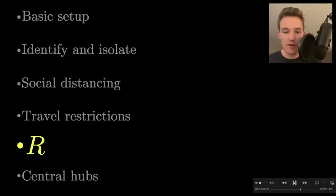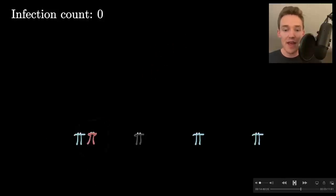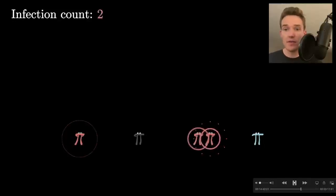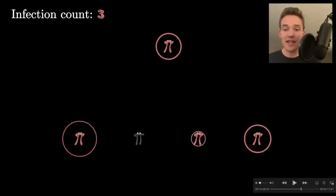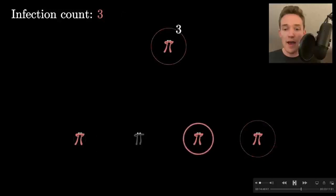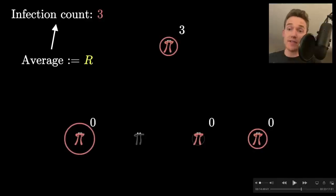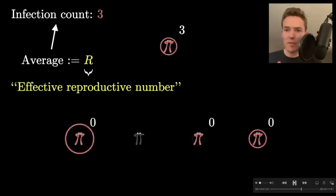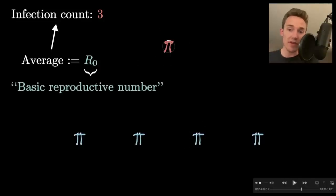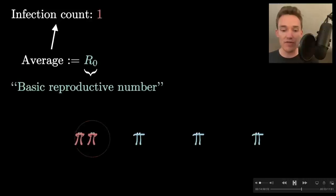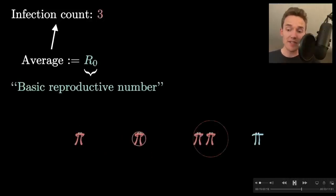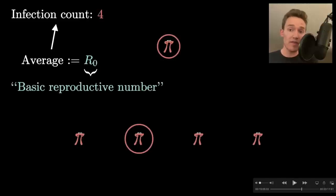Say someone is infectious, going around spreading the disease. You count everybody they've infected while infectious before they recovered. In this case, the agent went and infected three people — touched four, but infected three. If you count that for each infectious person and average it across everybody who's infectious, we call that value the reproductive number, or R. R-naught is similar: it's effectively the reproductive number in a population where everyone is susceptible. This gives an apples-to-apples way to compare one disease to another.